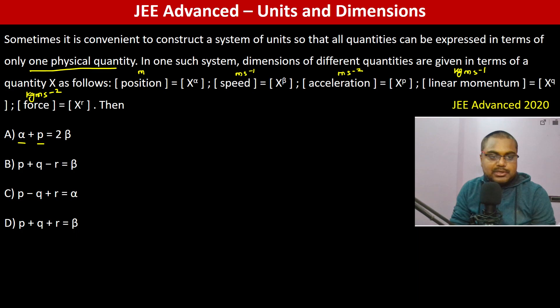Then alpha plus p equals 2 beta. Meter is equation 1, beta is equation 2, p is equation 3, q is 4, and r is 5. So what is alpha plus p? First equation is alpha and p is third, so meter into meter per second squared.